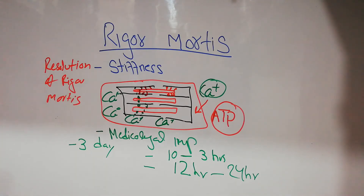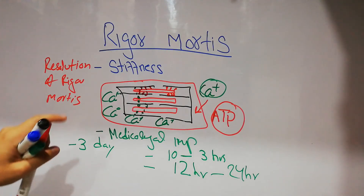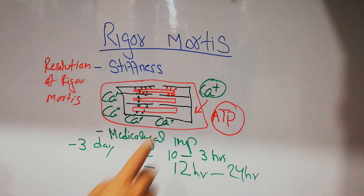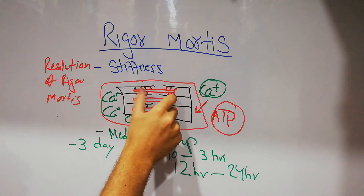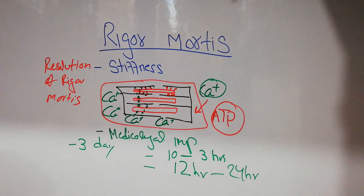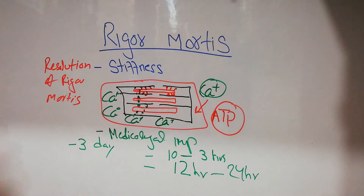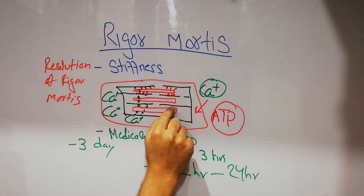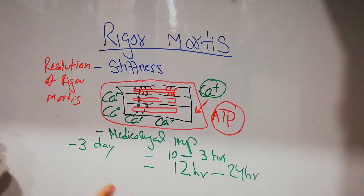Rigor basically means stiffening. This stiffening can occur in a normal human being due to high temperature as well, but rigor mortis specifically occurs after death. The reason being, a lot of calcium enters the muscle fiber, resulting in contraction of the actin and myosin filaments, and that contraction cannot be removed because ATP is required for removal of calcium. ATP is formed due to respiration and oxygen. When the person has died, there is no respiration, no oxygen, no ATP, and no removal of calcium, so the contraction continues. The contraction only ends when enzymes released after death destroy the actin and myosin, and when that destruction occurs, the stiffness is over — that is the resolution of rigor mortis.